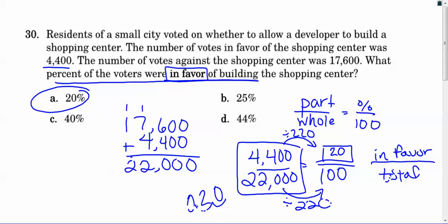So part over whole equals percent over 100. So we're focusing on the percent that were in favor. So we're going to say the part we're using is 4,400. So you can see that in that box that I have, in a square there, that is a part over the total number. Now, where did I get the total number? Well, if we know the part that voted for it and we know the part that voted against it, the whole amount is a sum of its parts. So we've got to add those two numbers together to figure out how many total people were voting. And when you add that, you're going to get 22,000 people voting.